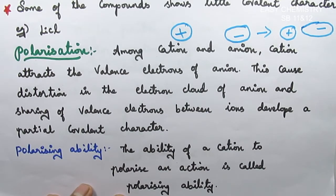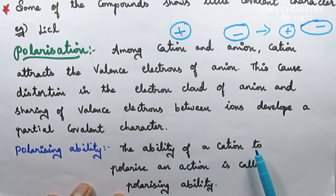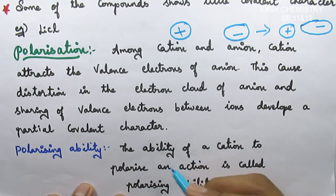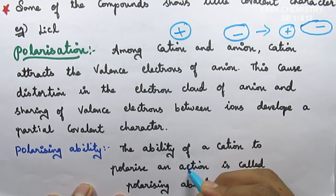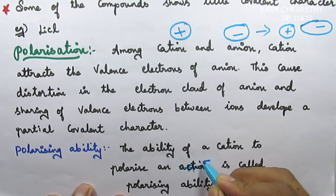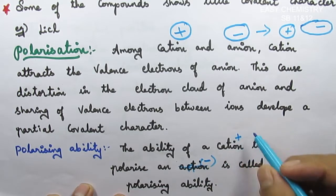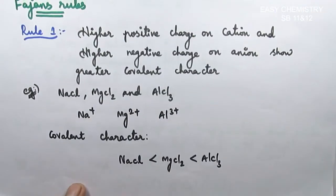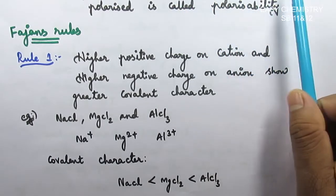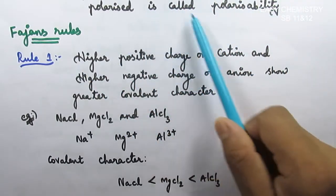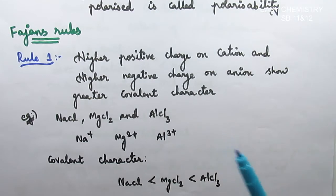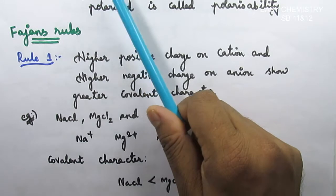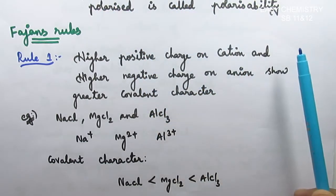The ability of a cation to polarize an anion is called polarizing ability. The tendency of an anion to get polarized by a cation is called polarizability. So polarizability refers to the anion, and polarizing ability refers to the cation. Now we learn Fajans' rules.